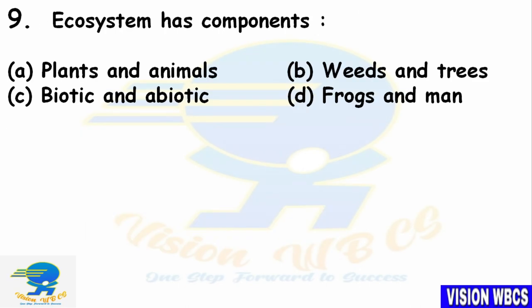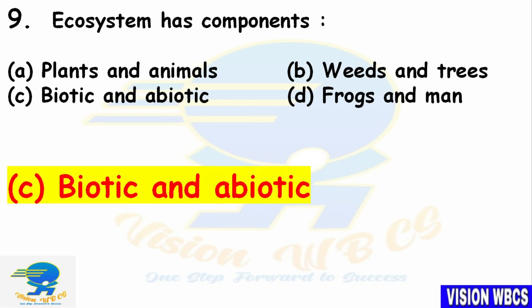Ninth question: Ecosystem has which components? Option A — Plants and Animals. Option B — Weeds and Trees. Option C — Biotic and Abiotic. Option D — Frogs and Man. The right answer is Option C: Biotic and Abiotic are the components of an ecosystem.